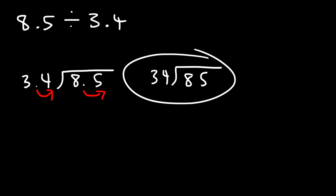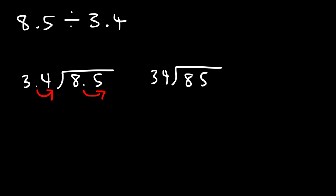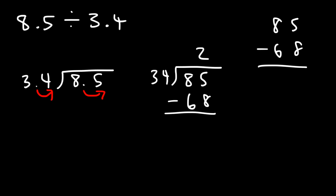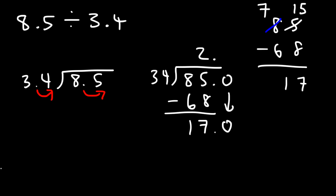So we're going to focus on doing long division. 34 goes into 85 two times — 34 times 2 is 68. If we subtract 85 minus 68, we need to borrow: the 8 becomes a 7 and 5 becomes 15, so 15 minus 8 is 7, and 7 minus 6 is 1, giving us 17. Now 34 doesn't go into 17, so we need to add a decimal point and a zero.